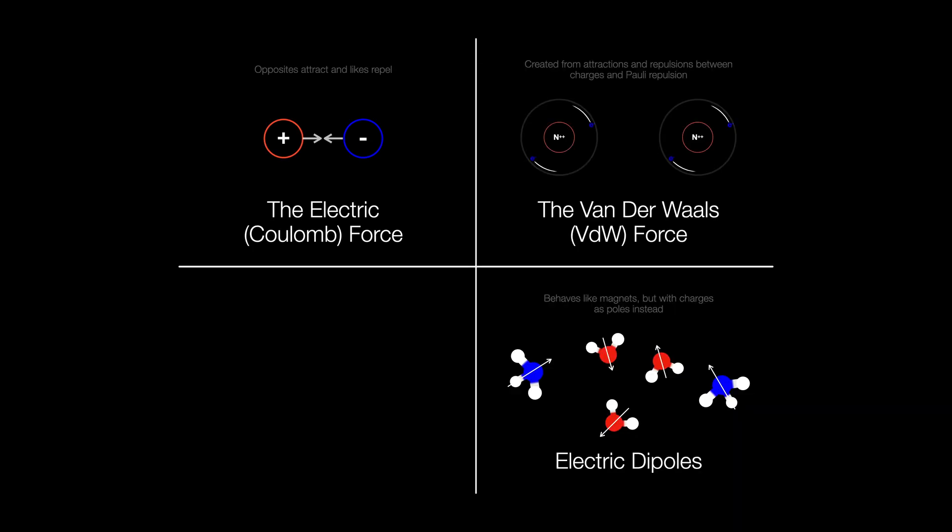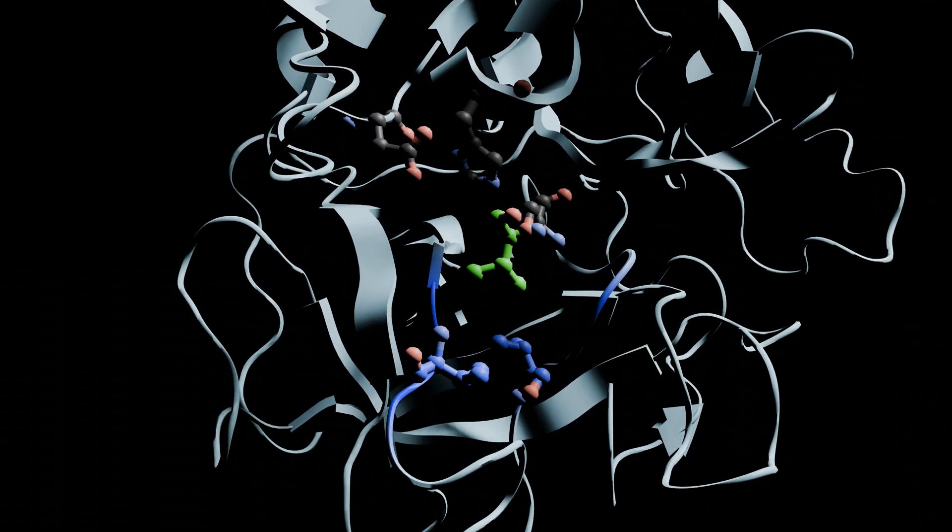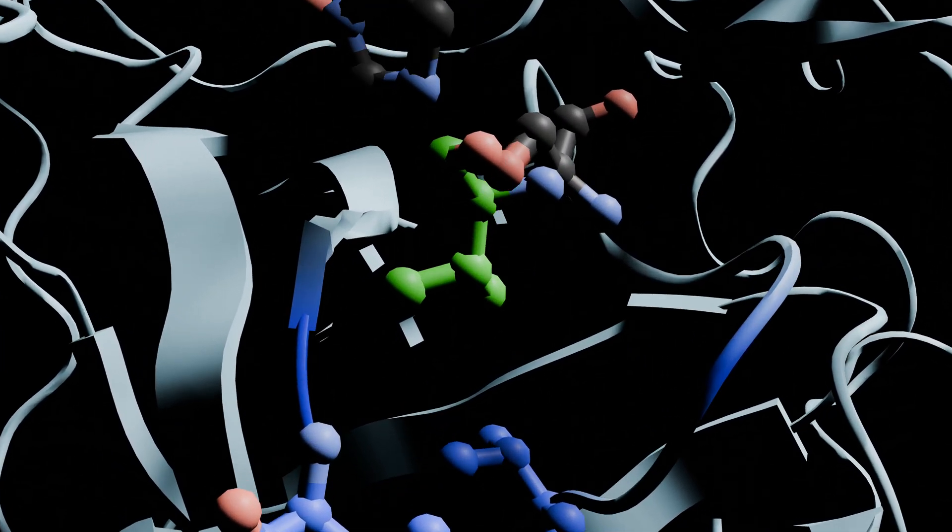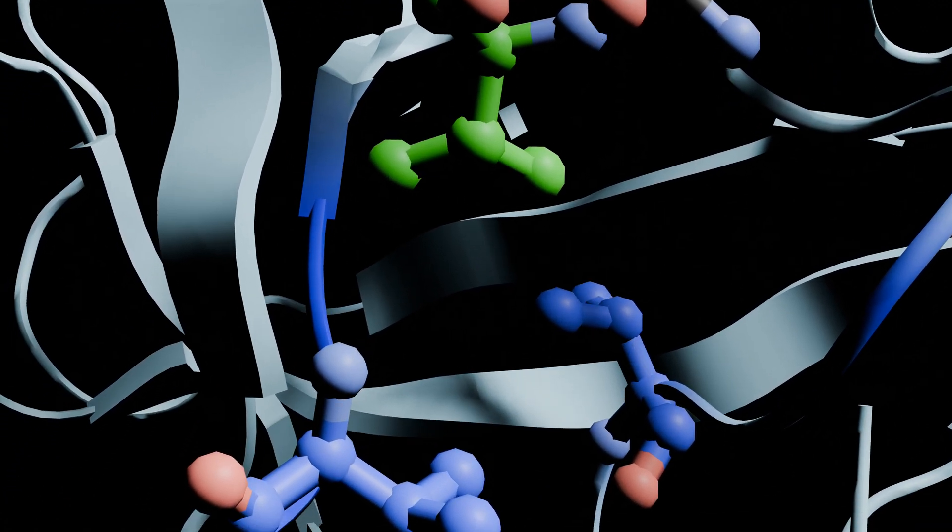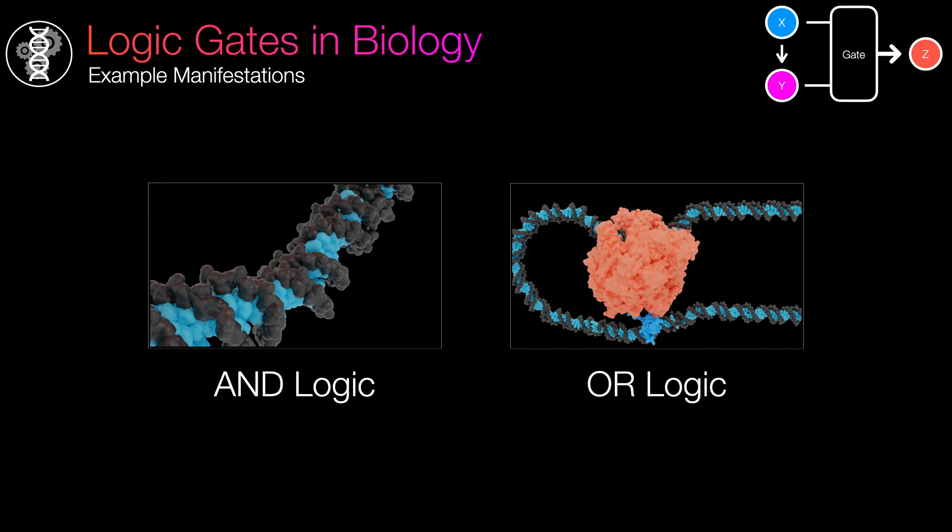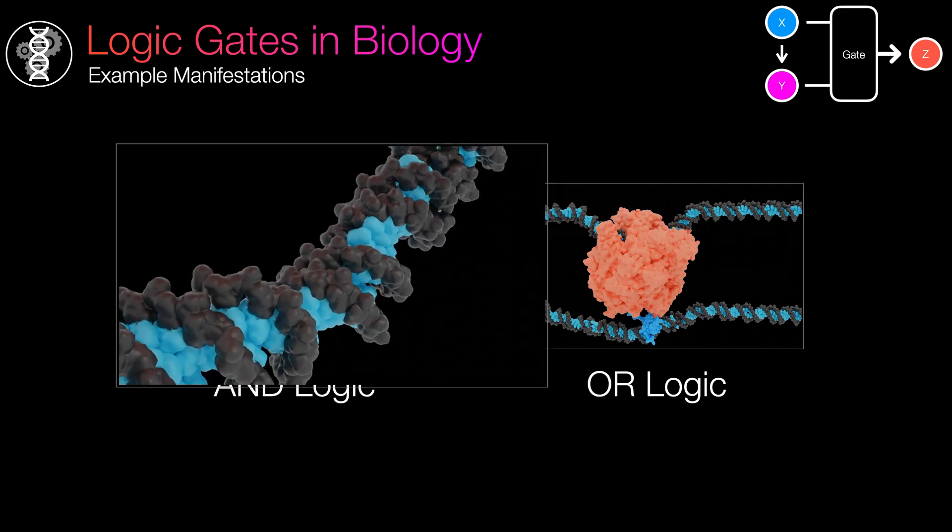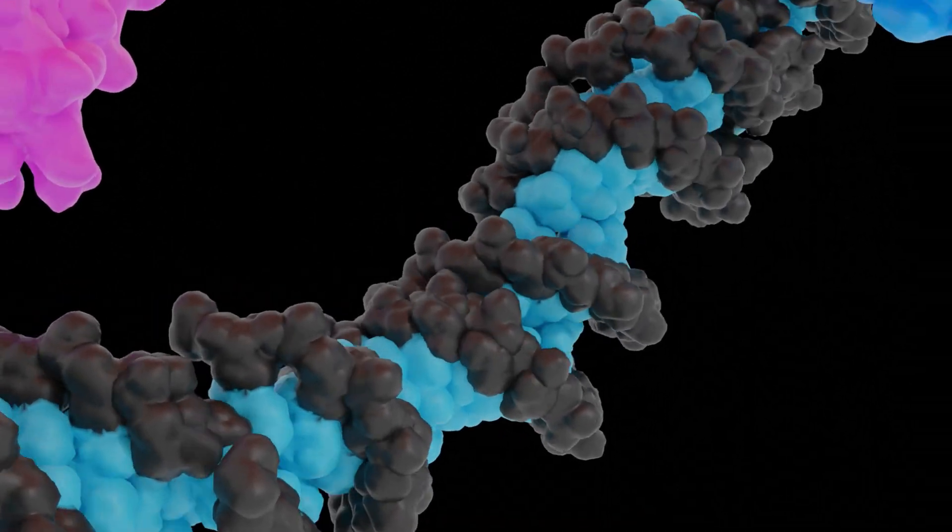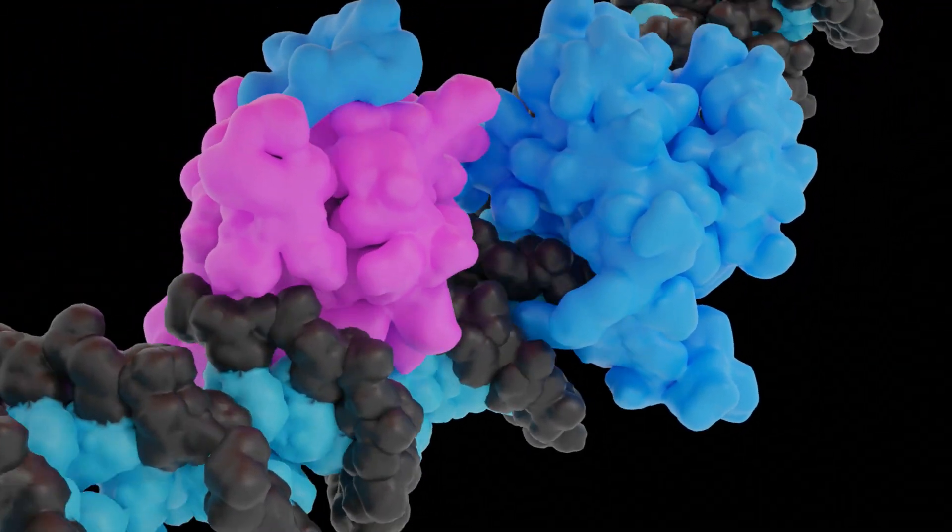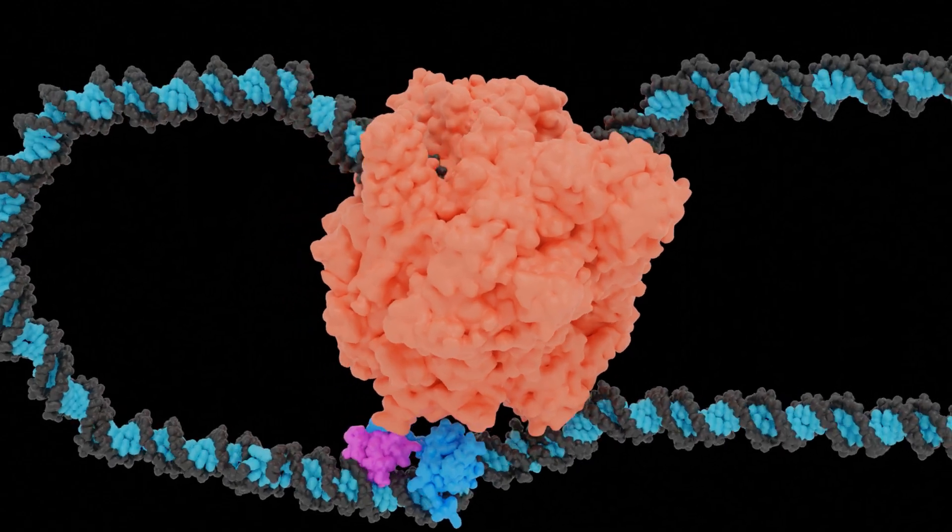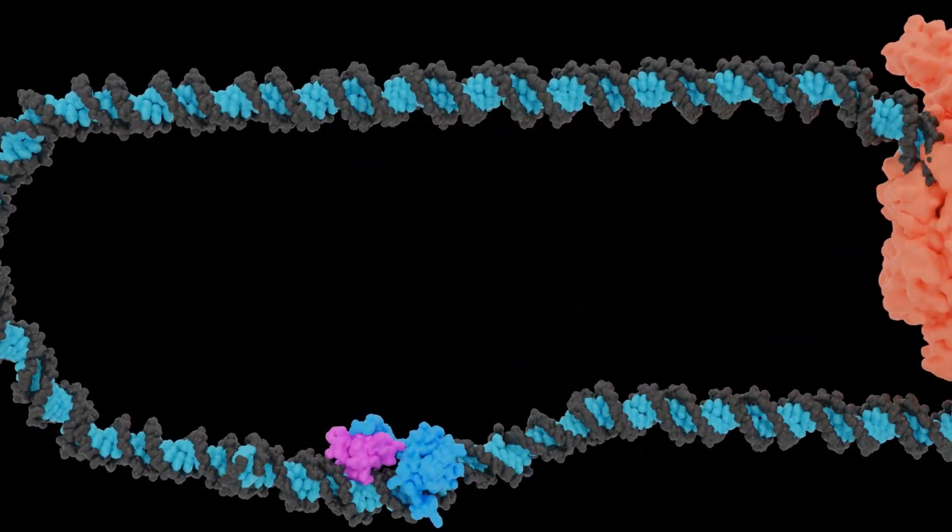You can learn more about these forces in my molecular dynamics video. This force is also used by elastase to block the hole, so only small amino acids are allowed. In fact, this whole idea of forces selecting for specific things the protein can interact with can be taken to the nth degree, to the point where proteins can recognize and read specific DNA sequences.